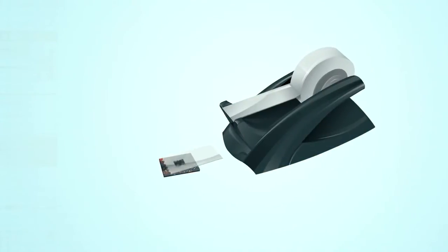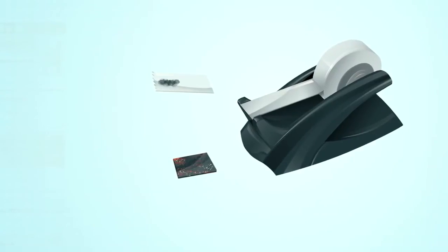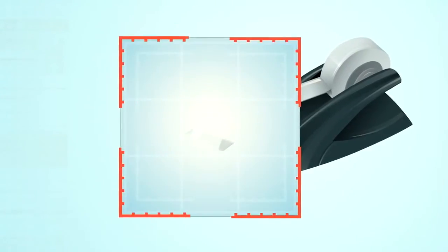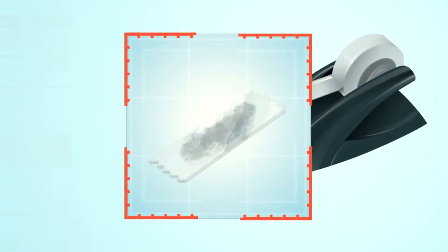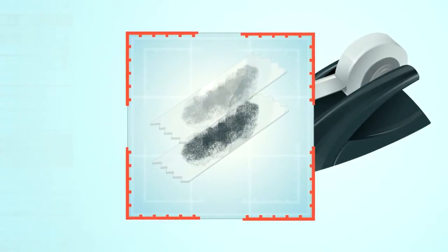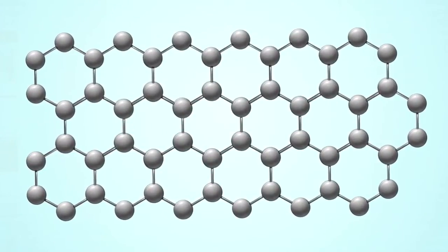To get an idea of how their technique worked, think of pressing sticky tape onto a piece of graphite and pulling it away, leaving the sticky surface covered with graphite flakes. Then, press the sticky tape to itself and pull it apart. After a few rounds of this, the flakes on the tape would only be a single atom thick, pure graphene.